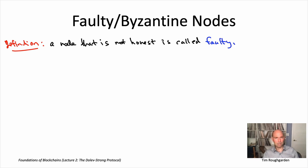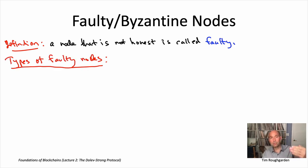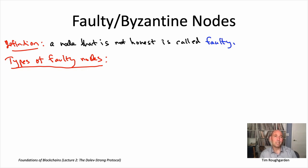I'm going to mention three common ones, starting from the strongest assumption to the weakest assumption about faulty nodes. I'm telling you three because I want you to know some of the history here, but really it's going to be the third of these three which is going to be the only one relevant in our discussion of blockchains, where we really can make very few assumptions about behavior on account of the permissionless and very high value nature of those systems.